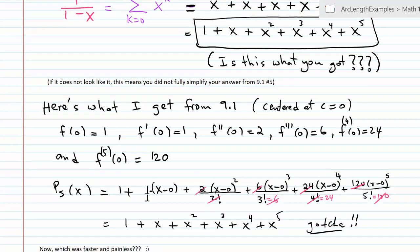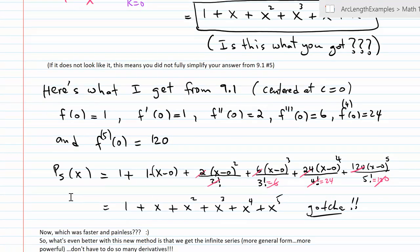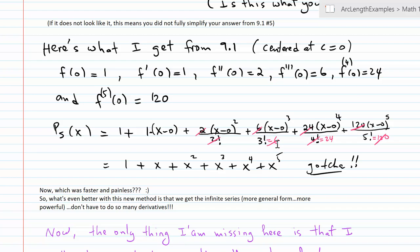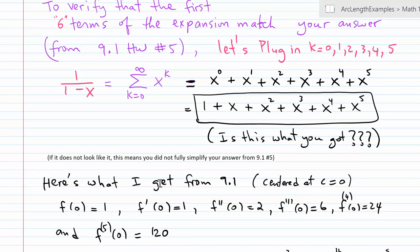Now I'm kind of reviewing here - this is what you should have gotten, by the way, in 9.1, number five, when you did all your derivatives and you plugged in the center, which was zero, in each derivative. These are the different coefficients you should have gotten. And then when you plug them all in, when you plug them all in into the Taylor polynomial expansion and you reduce completely, there you go - that's the fifth degree polynomial, which matches what I have at the top here.